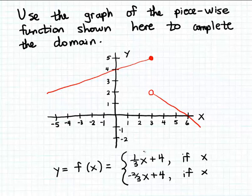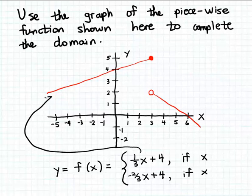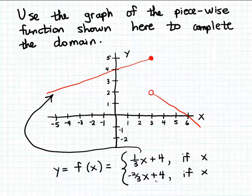The formula for a piecewise function is also going to consist of several different pieces — a different formula for each of the different curves that constitute the graph. In this example, because we have two distinct lines forming the graph, we're going to have two different linear formulas that taken together constitute the formula for this piecewise function. The first formula, one-third x plus four, corresponds to the left-hand piece, and the second linear formula corresponds to the second piece of the graph.